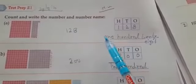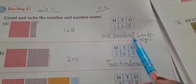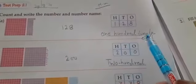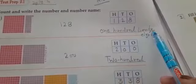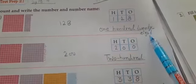Now we write a number name: O-N-E, H-U-N-D-R-E-D, 100. T-W-E-N-T-Y, 20. E-I-G-H-T, 8. One hundred twenty-eight.